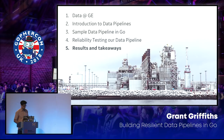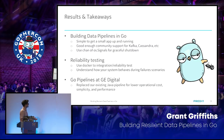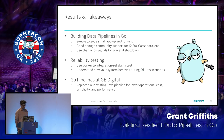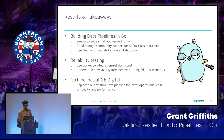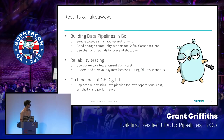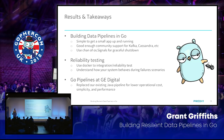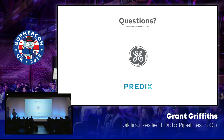To wrap up: building your data pipeline in Go — it's simple to get a small app up and running. There's good enough community support for Kafka and Cassandra to build data pipelines in Go. You can use the signals channel for graceful shutdowns, which is a nice pattern for any Go service. You can do reliability testing with Docker to integration test your system and understand how it behaves during failure scenarios before they happen at 3 a.m. and you get paged. And we successfully replaced our Java pipeline for much lower operational cost, simplicity, and better performance.